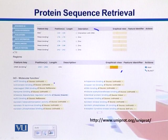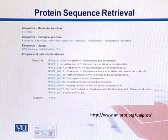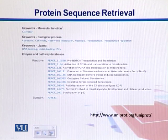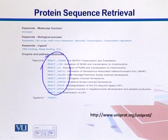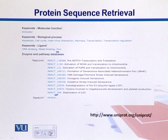Moving on to the biological process categories, we see that this protein is related to apoptosis — which is programmed cell death — and it's also related to the cell cycle and other components. Further down, there are enzyme and pathway databases. Reactome is a database containing groups of reactions that are categorized, and this shows the list of reactions with which the protein is associated.